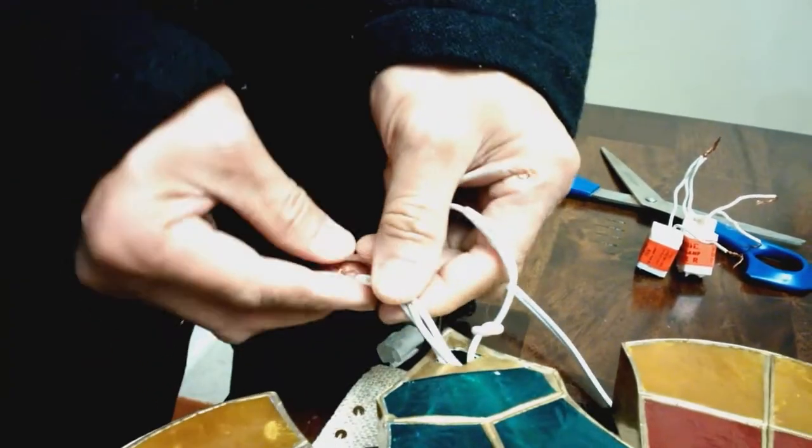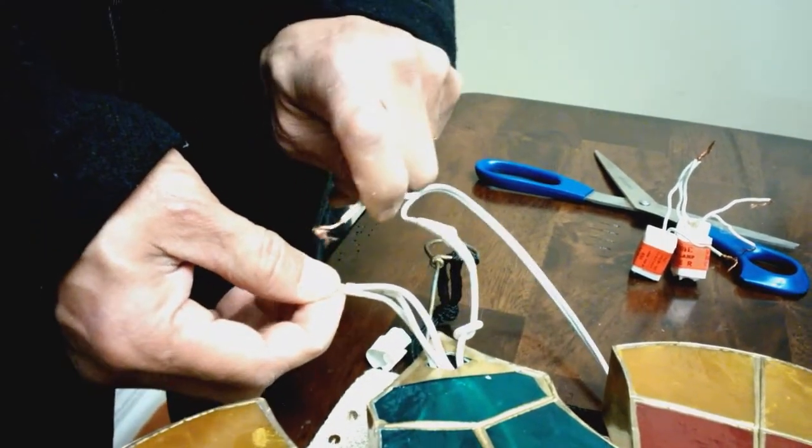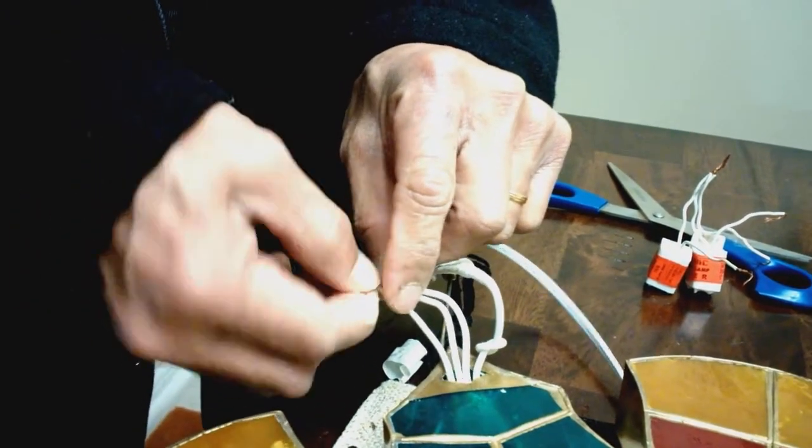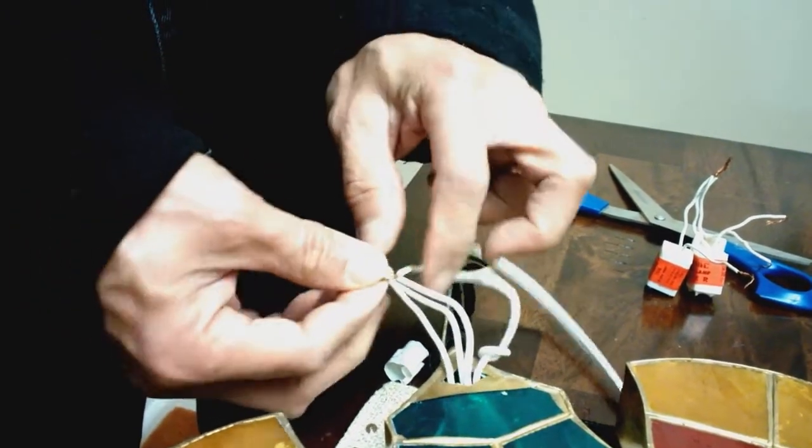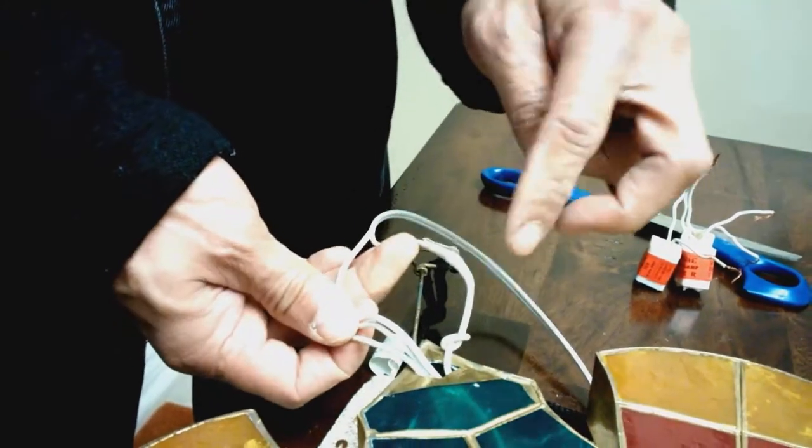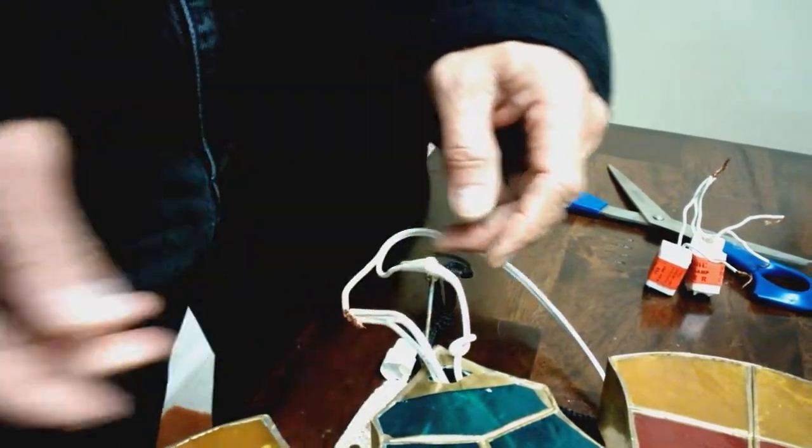You tape that one, you put electrical tape on that. There you go, positive or negative or negative or positive. Once you turn this on, you need to tape that first or else you'll get electrocuted.